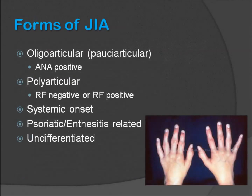There are different forms of JIA as shown in slide 4. It could involve a few joints, called oligoarticular JIA, or multiple joints, called polyarticular JIA, or it could be part of a systemic onset disorder. There are also forms of JIA related to psoriasis and enthesitis, as well as an undifferentiated form of JIA.